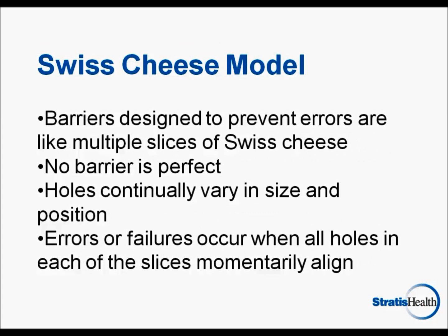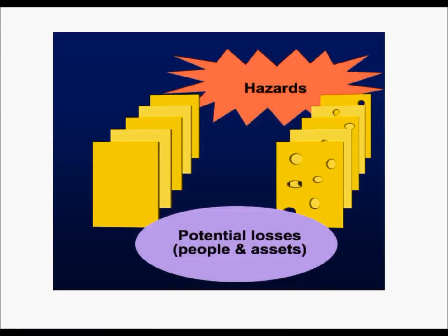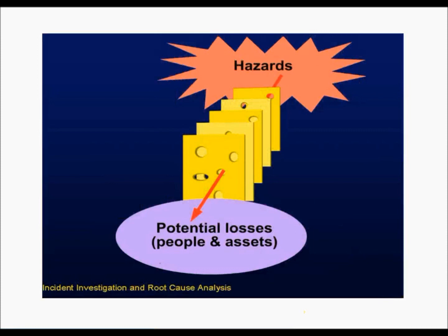The final theory is the Swiss cheese model, where the barriers we have designed to prevent errors are thought of as multiple slices of Swiss cheese. They are Swiss cheese because no barrier is perfect — they all have holes, and these holes can be thought of as continually varying in size and position. Unintended outcomes and errors occur when the holes in each of the slices align. Here's a graphic of how we can look at our typical environment. The slices on the left are what we would like to have — no holes — while what we do have on the right are barriers with holes of various shapes and sizes, and when these holes align, we have an unintended outcome or error.